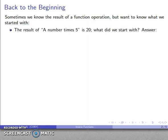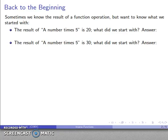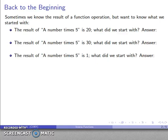As an example, suppose I know that the result of a number times 5 is 20, and I want to figure out what I started with. My answer is going to be, well, let's defer that. But maybe I also know that the result of a number times 5 is 30, and I want to know what I started with. And likewise, a number times 5 is 1, and I want to know what I started with.